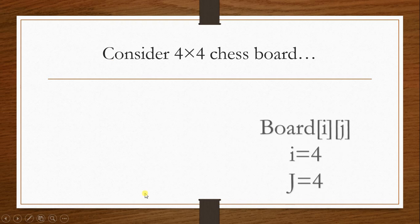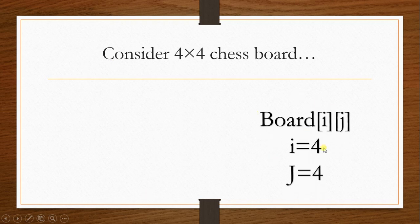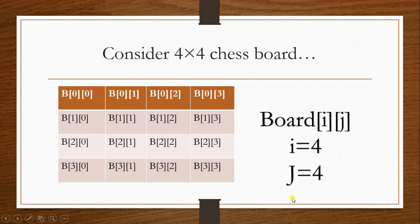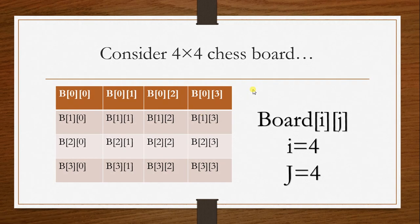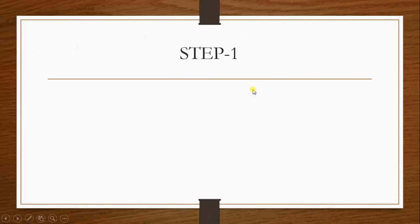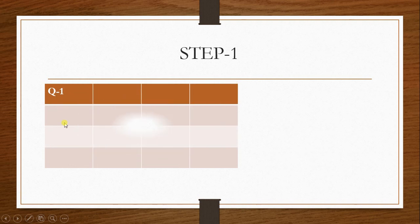Let us consider a 4x4 chessboard. Here R refers to row and C refers to column. We can observe a 4x4 chessboard and the locations are detailed as B[0][0], B[0][1], and so on.